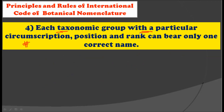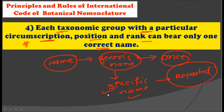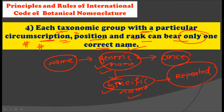The fourth rule is that each taxonomic group with a particular circumscription, position, and rank bears only one correct name. The generic name appears only once and cannot be repeated, but the specific name is allowed to be repeated. For example, Mangifera indica and Azadirachta indica both share the same specific name 'indica', so the species name can be repeated but the generic name cannot.